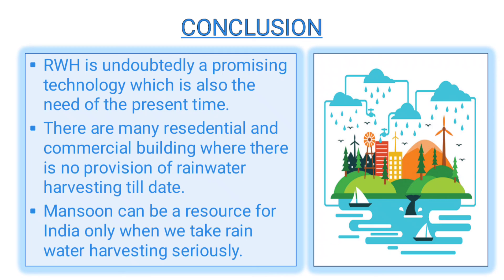Finally, conclusion: rainwater harvesting is undoubtedly a promising technology which is the need of the present time. There are many residential and commercial buildings where there is no provision of rainwater harvesting till date, but it is required. Monsoon can be a resource for India only when we take rainwater harvesting seriously. It is very important for us to conserve water because it is a very precious resource for the present time and also for the future. Save water, save life. Thank you very much.